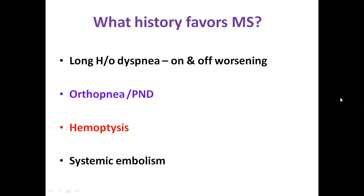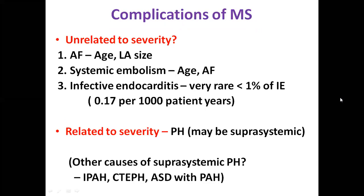In history, findings that favor mitral stenosis include: long history of dyspnea for years with on-and-off worsening and improving, history of orthopnea and PND, hemoptysis, and systemic embolism. Complications of mitral stenosis can be unrelated or related to severity. Complications unrelated to severity include atrial fibrillation — more related to age than severity — and systemic embolism, which is related to age and atrial fibrillation. Infective endocarditis is very rare, less than 1 percent, at about 0.17 per thousand patient-years.